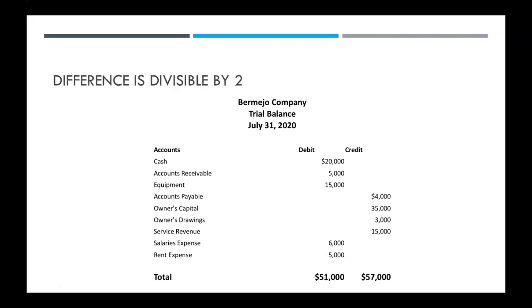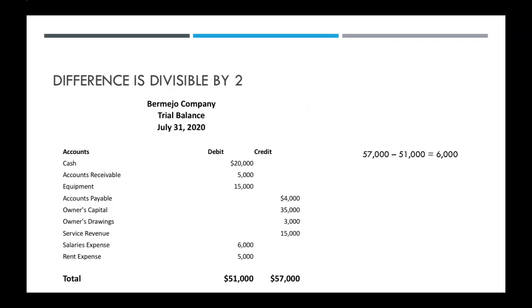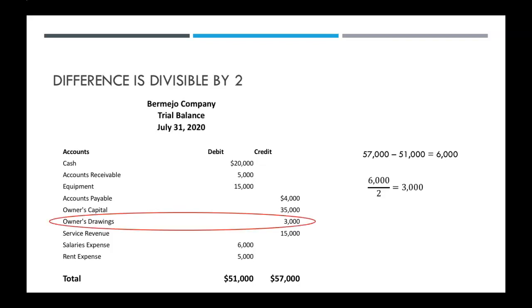Now let's say that didn't work. We can see if our difference is divisible by two. In this example, our total debits are 51,000 and our total credits are 57,000. So we find the difference between those and we see it's 6,000. Is it divisible by two? Yes. So we divide it by two and now we're looking for that 3,000 — we're trying to see if that 3,000 is on the wrong side. We can take a look at our owner's drawings, which has a balance of 3,000, and we put it on the credit side in this trial balance.